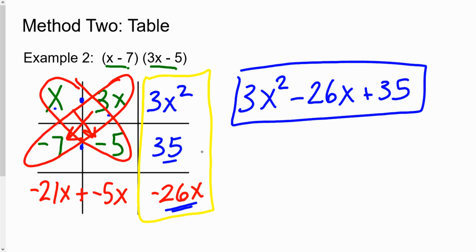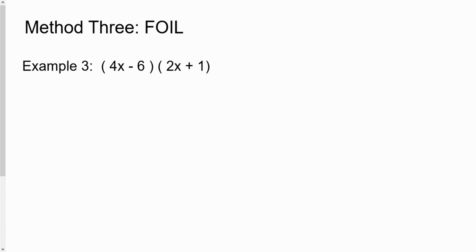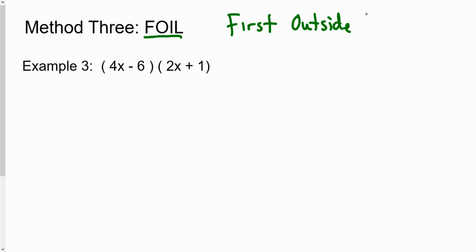If the table method isn't your favorite, don't focus on it — I'm just showing you all four methods. The third method is the old-school method: FOIL, which is how I learned it. FOIL is an acronym that stands for First, Outside, Inside, and Last.